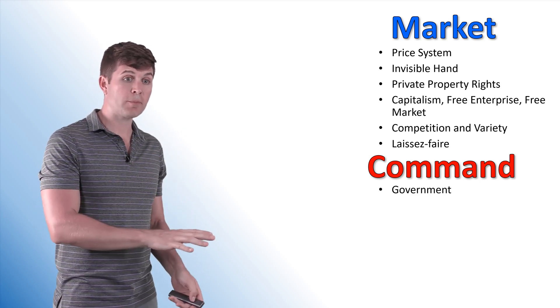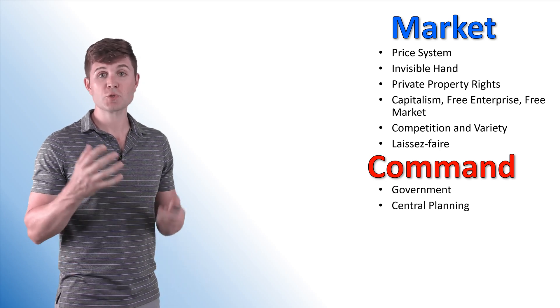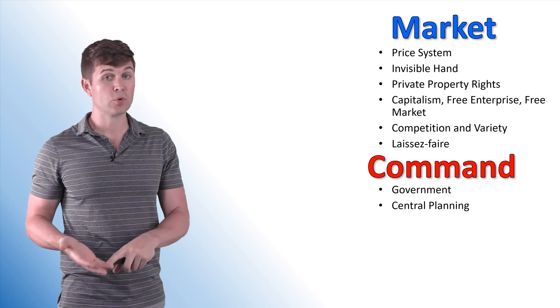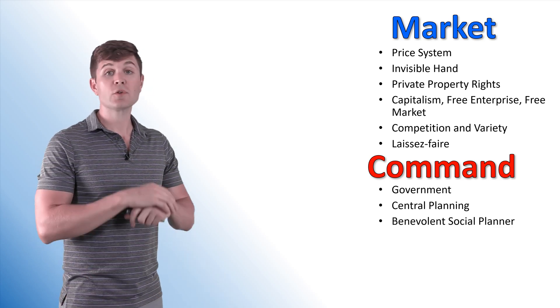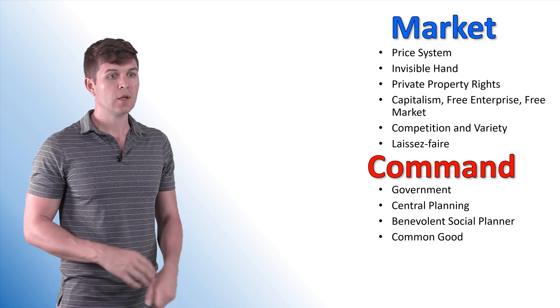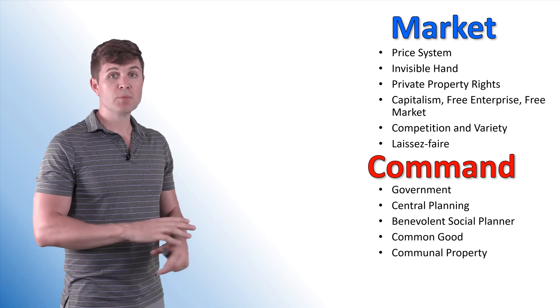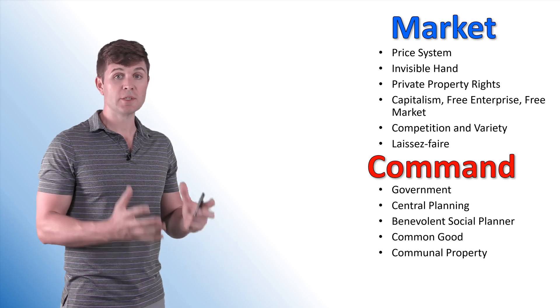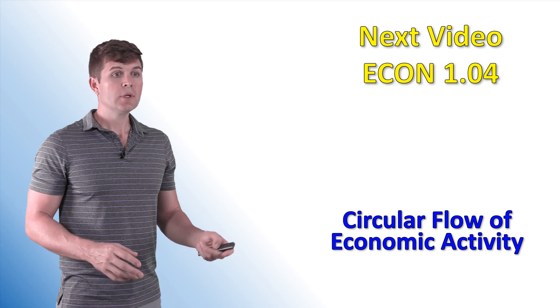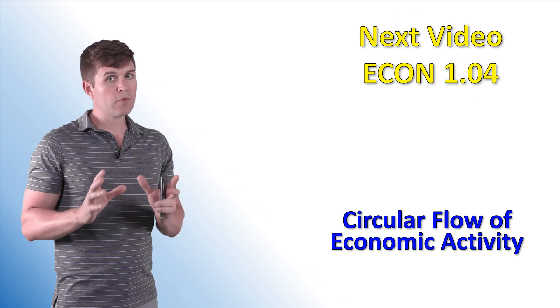Now, when we go down to a command, government is heavily involved. Central planning. There's some central planning agency determining what, how, and for whom to produce. There's a benevolent social planner. It's just a term they like to use in the questions. Common good. Everybody's working for the common good. Communal property often used in a command economy. And communism. Socialism gets thrown in there too, but that's more of a mixed economy.